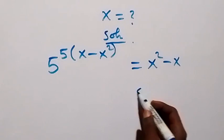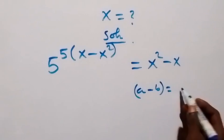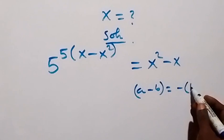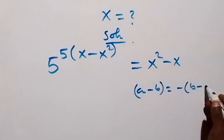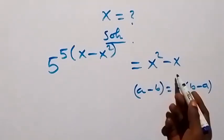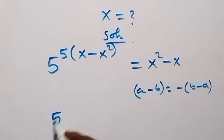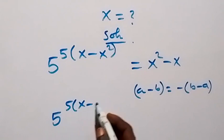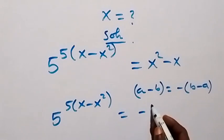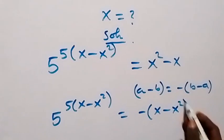When we have a minus b, we can equally write it as minus into bracket (b minus a). So we write this, and we are going to have it in the form of x minus x squared. This becomes 5 raised to power 5 into (x minus x squared), now equals to minus into bracket (x minus x squared).